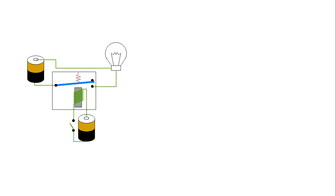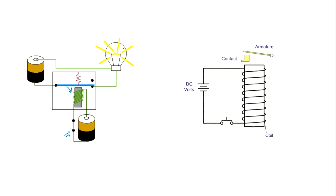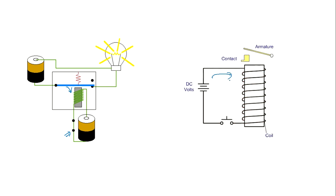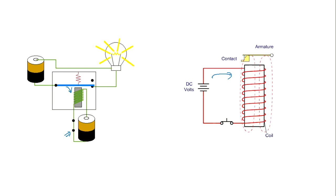This is an animation explaining the working of the relay. You can see that when the coil is energized with the battery, it makes the circuit close by attracting the armature towards the coil. When it is open, the light will be off. Through the coil, when current flows, a magnetic field is generated, and that magnetic field attracts the armature to make contact.